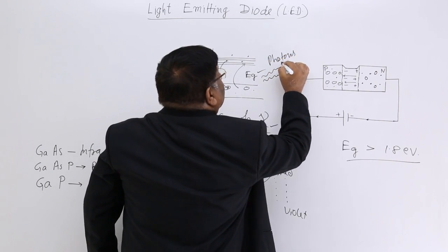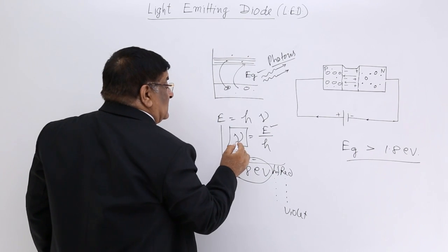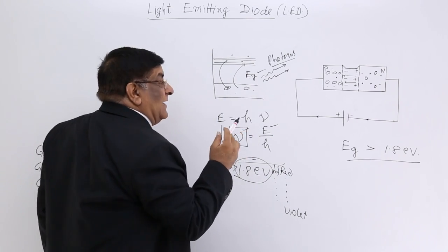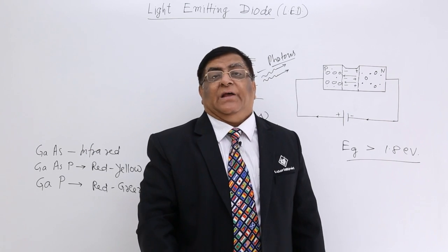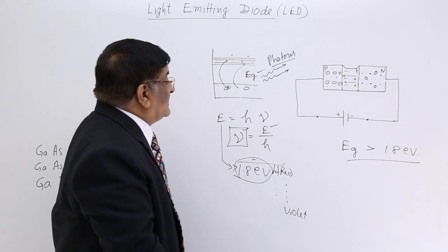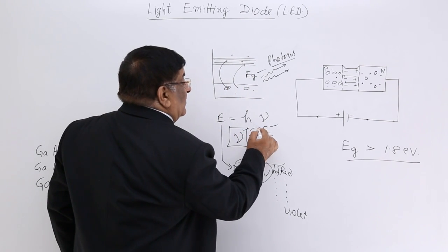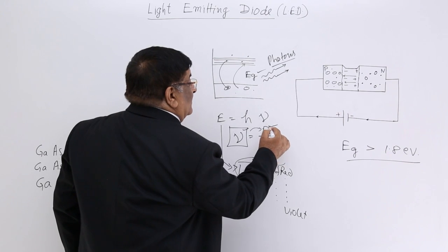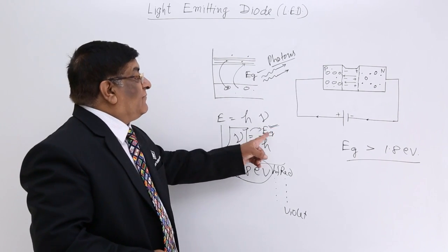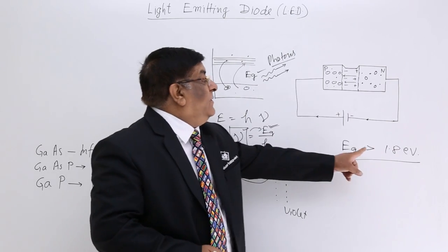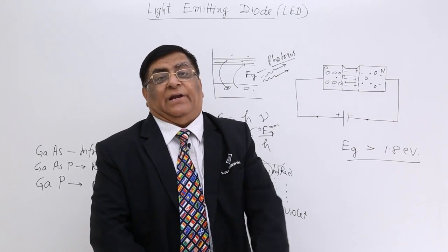And if these photons are having this much frequency, then it will sensitize our eyes, we will be able to see them. And for a particular frequency, what do we need? A particular level of energy gap. And what is that energy gap we have calculated? It should be larger than 1.8 electron volt.